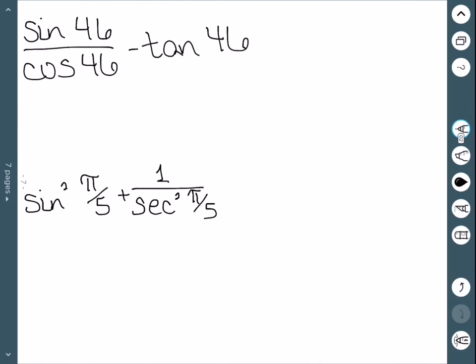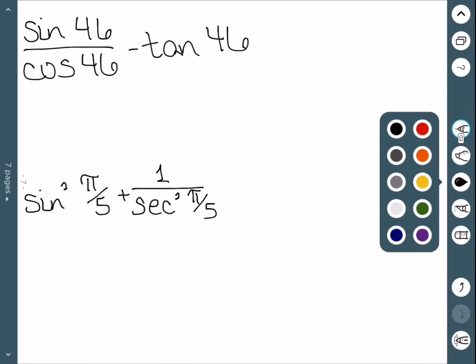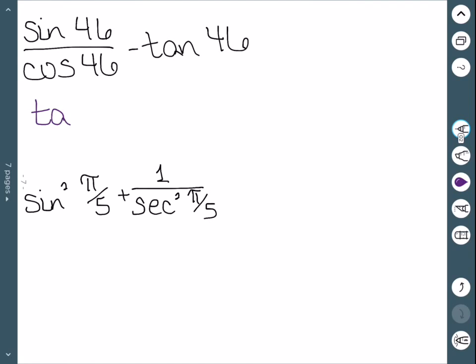We'll now try to find the exact value of these. First, we must realize that sine over cosine is the same thing as tangent. So I now have tangent of 46 minus tangent of 46, which is 0.